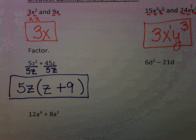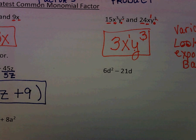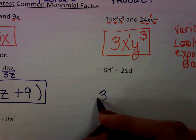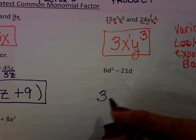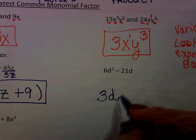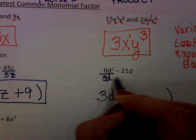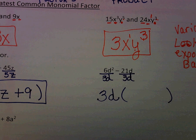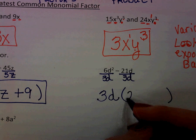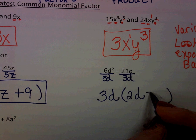The next example, what is my greatest common factor? Between 6 and 21, my GCF is 3. Between d squared and d, my GCF is d. So now I'm going to have something left. I have to divide out my greatest common factor. 6d squared divided by 3d would be 2d. And when I divide it, I get minus 7.